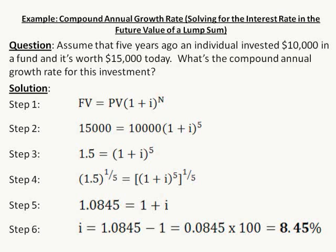Step 1: using the future value of a lump sum formula, FV equals PV times 1 plus I raised to the nth power. FV stands for future value, PV stands for present value, I is the interest rate, and N is the exponent representing the time period.